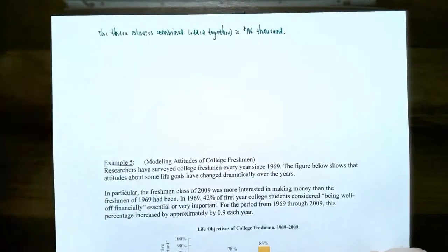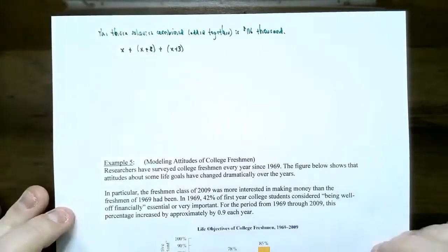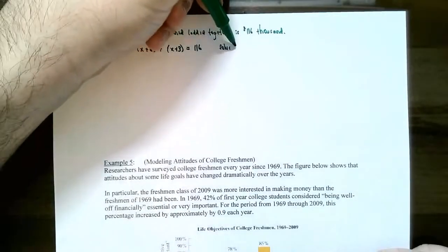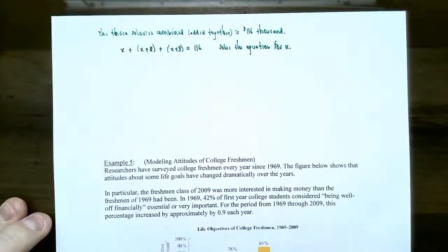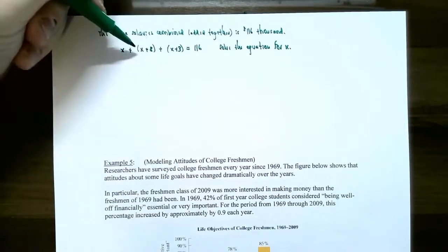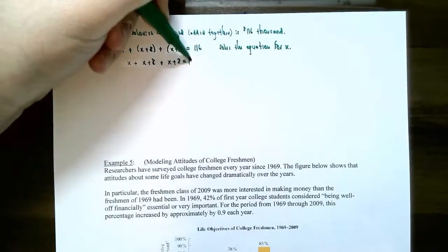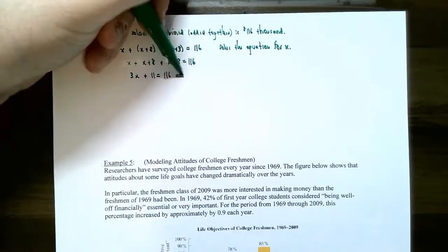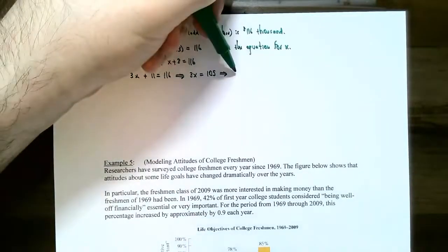Taking those three expressions — X for psychology, X plus 8 for business, X plus 3 for English — and adding them together gives 116. You can drop the parentheses since we're not distributing anything other than 1. So X plus X plus 8 plus X plus 3 equals 116. Combining like terms gives 3X plus 11 equals 116. Subtract 11: 3X equals 105. Divide both sides by 3: X equals 35.